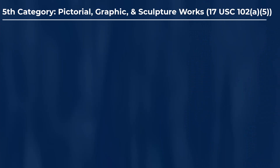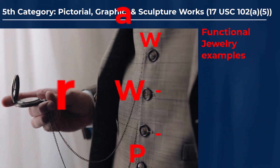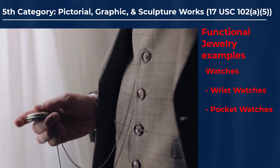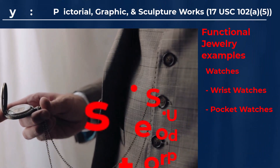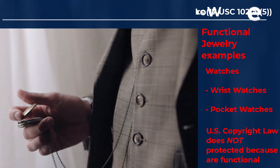Whereas functional jewelry might include things like wrist and pocket watches, which would not be protected by U.S. copyright because they are functional objects.